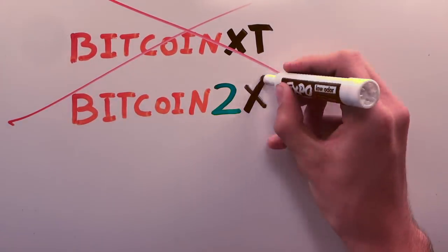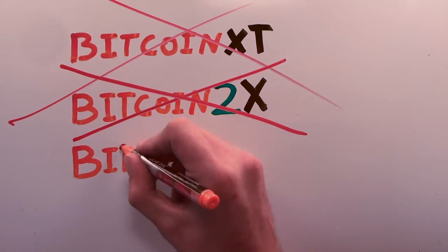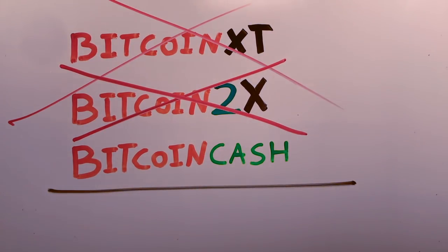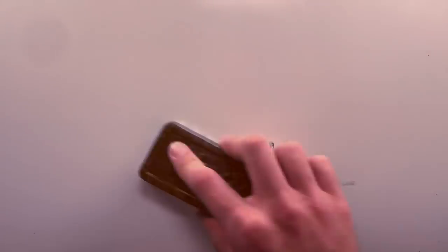Every attempt at raising the block size in the past several years has been shut down immediately or delegitimized, with no compromise. Could it be that on-chain scaling is being halted for other reasons?